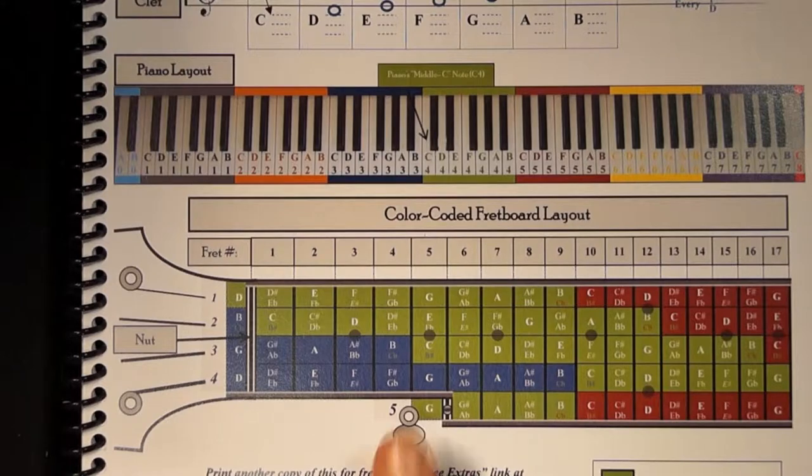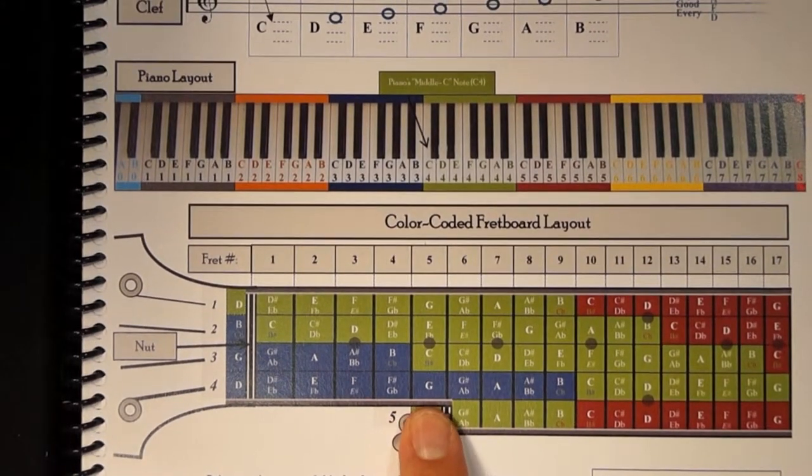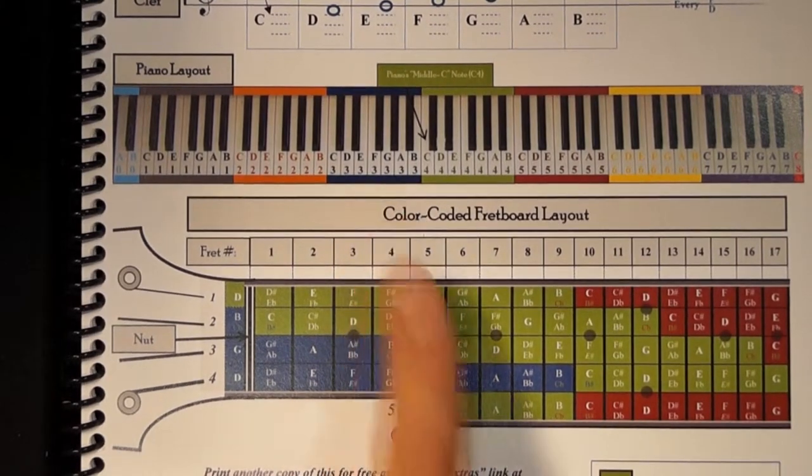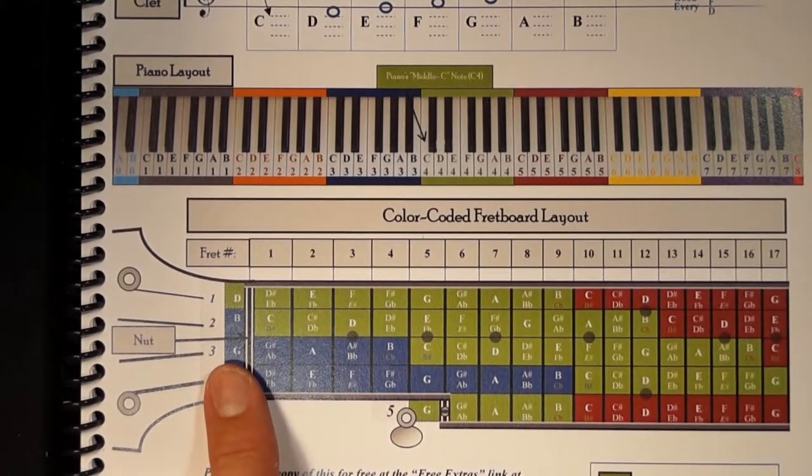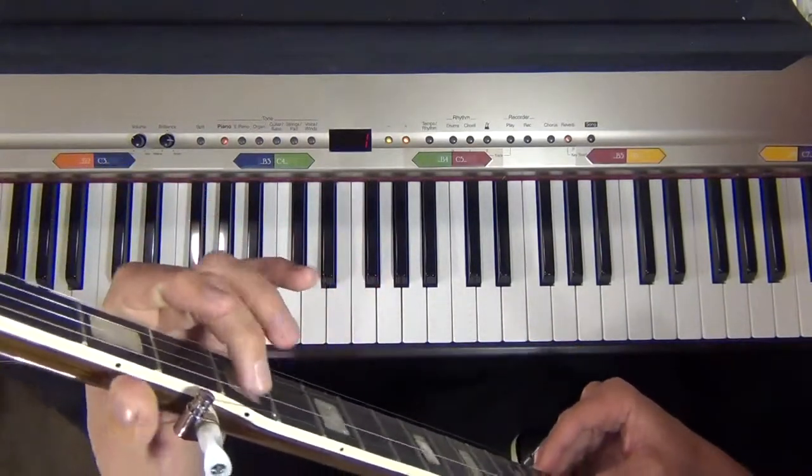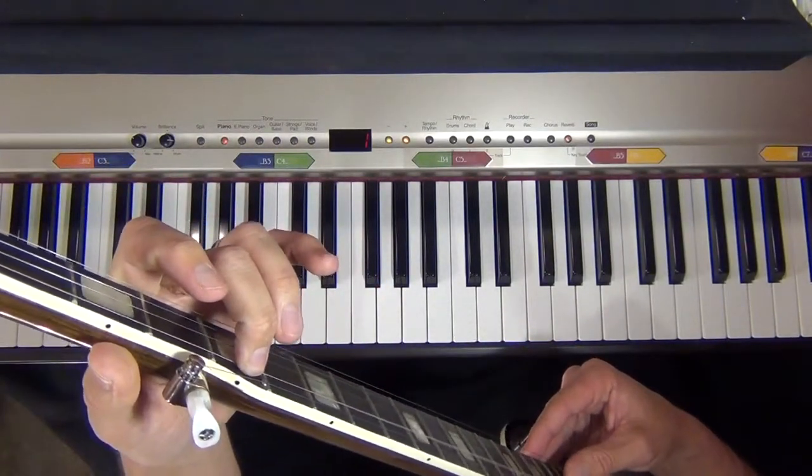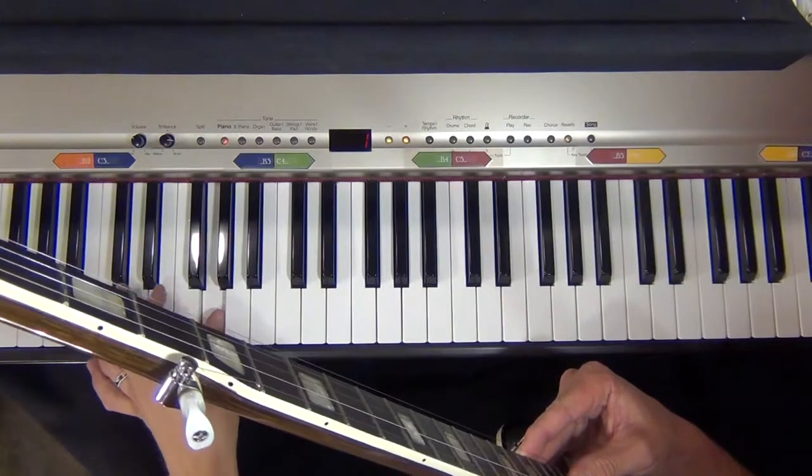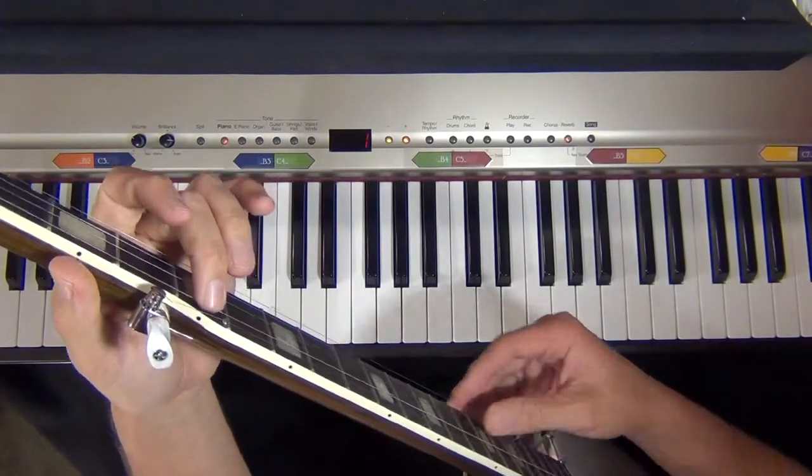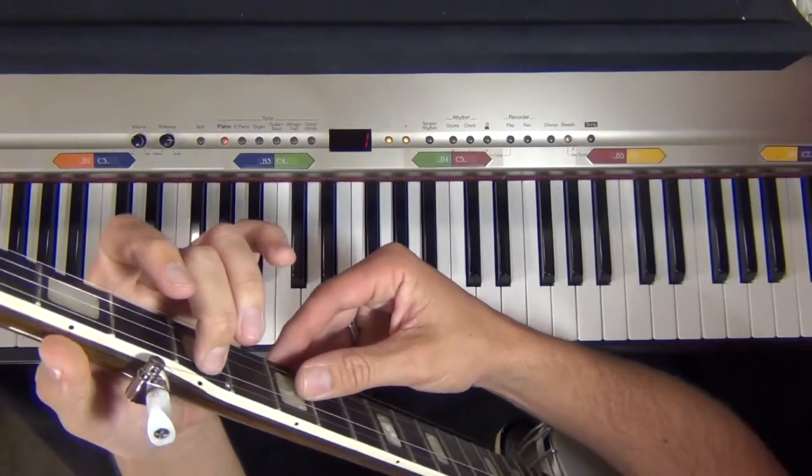For tuning, what you can do is if I look at the fourth string fifth fret, that's going to be a G note, that's my G3 note, and that's going to be in the same octave as the third string here. This G right here on the fifth fret is this note, which is the same as the third string, which is the same as the third string open.